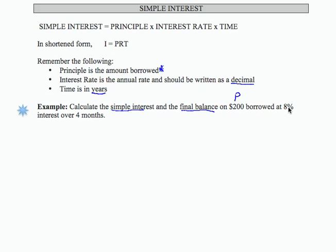Borrowed at 8%, that's our rate as a decimal, .08, over 4 months. Now time has to be in years. So 4 months is one third of a year.